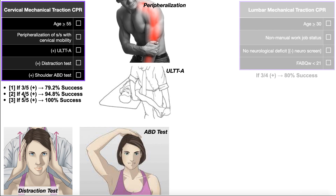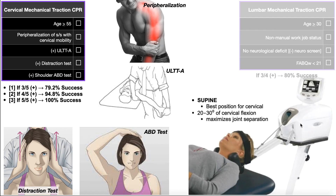If you decide that your patient needs cervical mechanical traction, remember from the previous video we're going to have the patient in supine generally. We don't just have the back of the head resting on the table with the neck in neutral — we're actually going to have about 20 to 30 degrees of cervical flexion. The reason is that we can maximize intervertebral separation and gap them better when there's a little bit of cervical flexion.